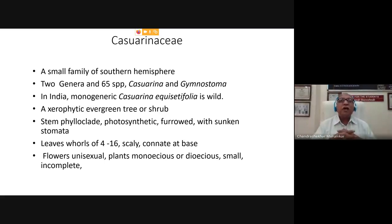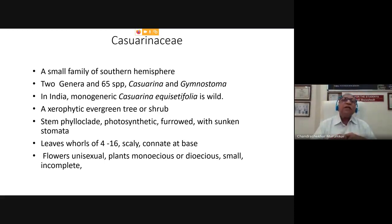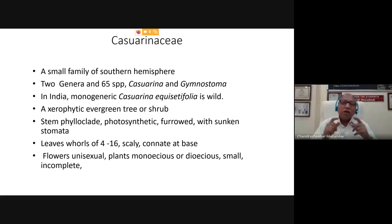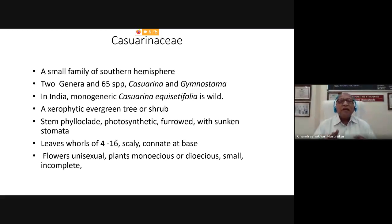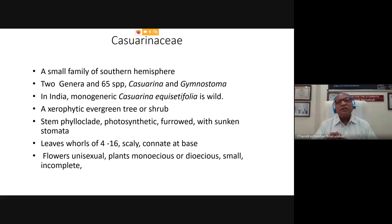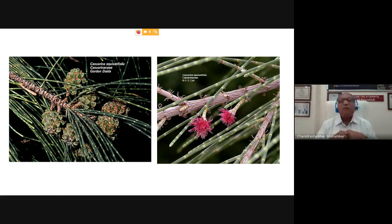The flowers do not contain the calyx and corolla; they contain the perianth, or even the perianth is absent. They may contain either only the stamens or only the carpels. If the male flower is there it will contain the stamens; if the female flower is there it will contain the carpels.